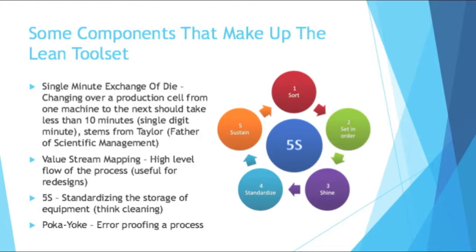Then you have value stream mapping, which is a high-level flow of the process. It's very useful for mapping the current state of a process and a potential future state. It's probably the farthest back you can step and look at a process — very general, covering things like manufacturing, shipping, etc. You have 5S of course, which we've touched on earlier; the image there shows what each of the S's stands for, and a lot of people even add a sixth or seventh S. Then you also have poka-yoke. A poka-yoke is typically a mechanical tool or device that error-proofs the process. It prevents a defect from getting through, usually because the laws of physics will not allow the defect to happen. The best poka-yokes work that way.